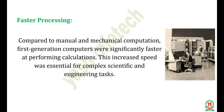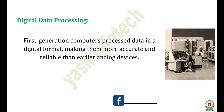Faster processing: compared to manual and mechanical computation, first-generation computers were significantly faster at performing calculations. This increased speed was essential for complex scientific and engineering tasks. Digital data processing: first-generation computers processed data in a digital format, making them more accurate and reliable than earlier analog devices.